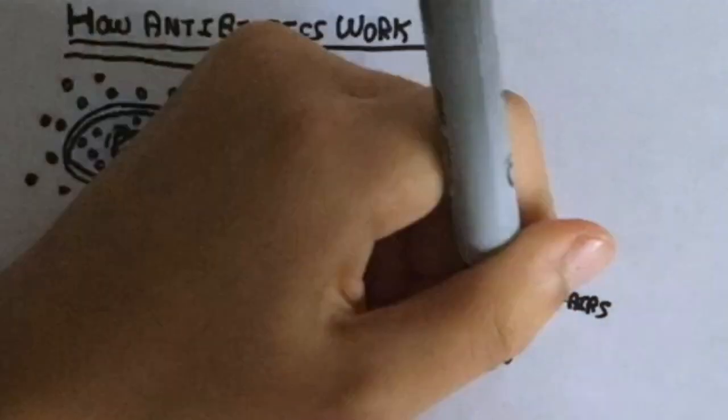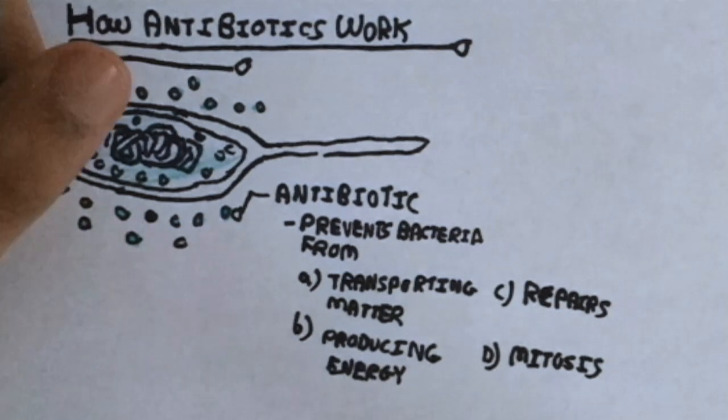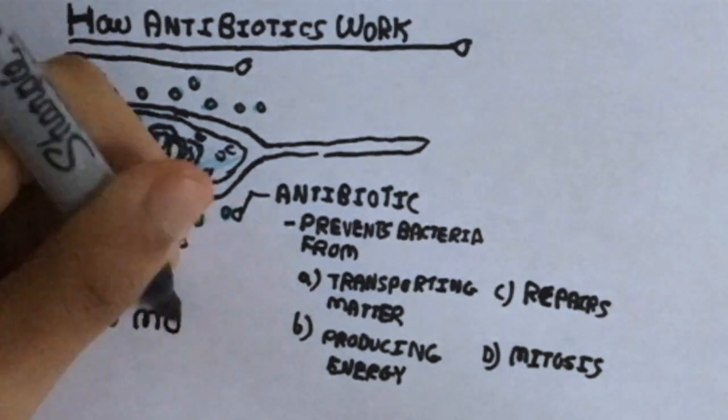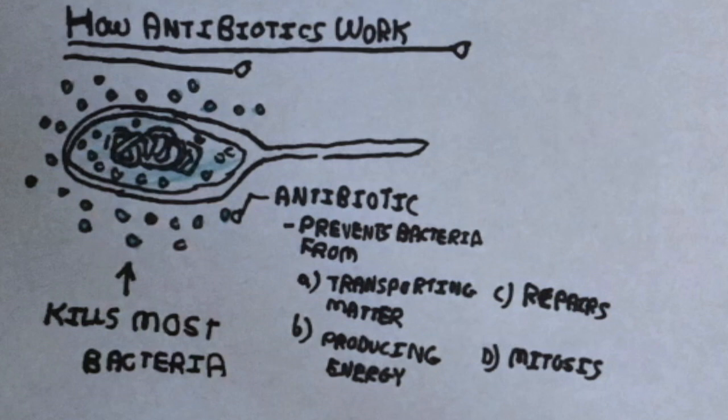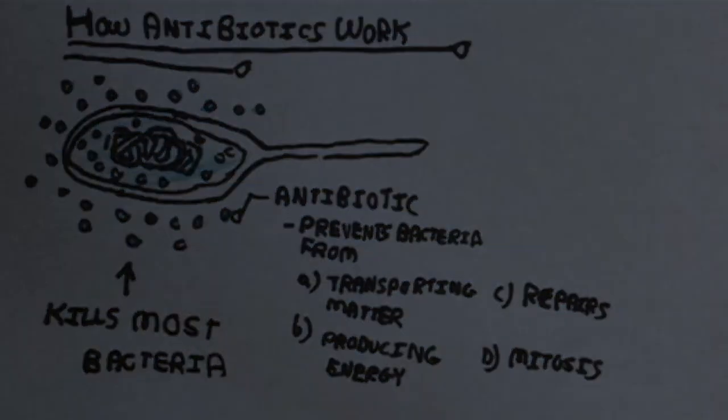However, antibiotics prevent these micro-machines in the bacterium from functioning, preventing them from dividing and ultimately killing them. Some antibiotics rip the cell membrane of the bacterium in bits, also killing it.